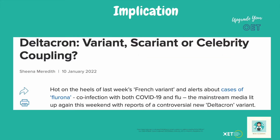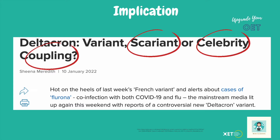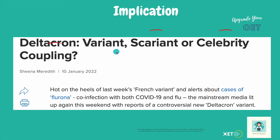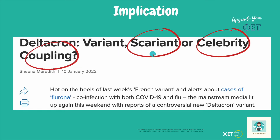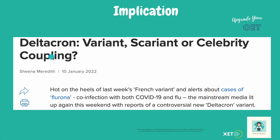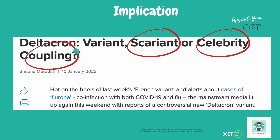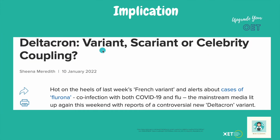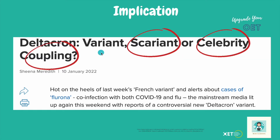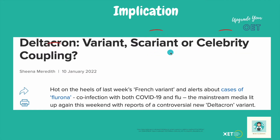Okay, if we look at the opening section — even just starting with the heading — we've got 'Deltacron Variant: Scariant or Celebrity Coupling.' This already carries a lot of meaning. This is the name of the new possible variant of COVID-19 that's been found. But is it really a variant? Is it a scariant?